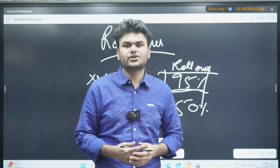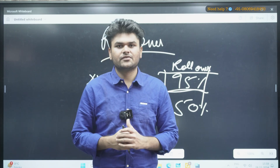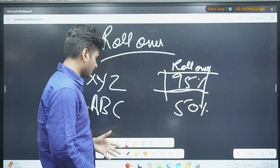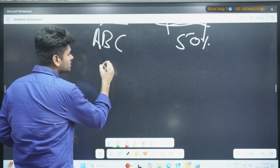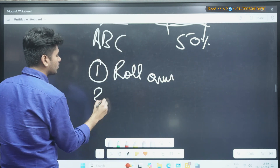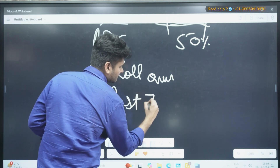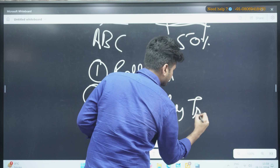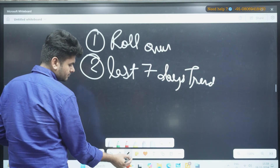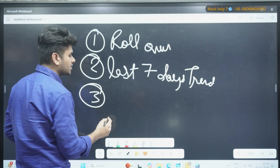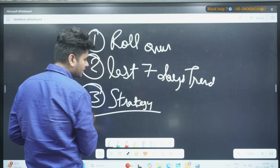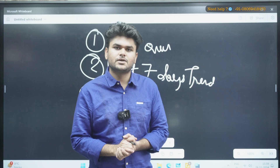Now how do we confirm what kind of trade to initiate — bullish or bearish? Because at this point the stock is identified but we don't know the trend direction. What you can do is check the last seven days of data to see the trend. So the process is: first, check rollover; second, check the last seven days trend; and third, initiate a strategy — because since we're going monthly, you need a proper strategy.